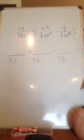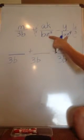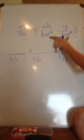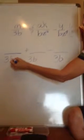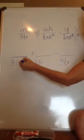You're going to choose the variable with the largest exponent, and that is going to become your common denominator. So it's z to the fourth.